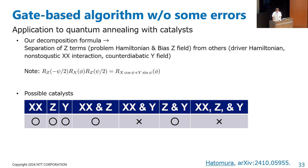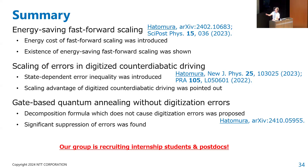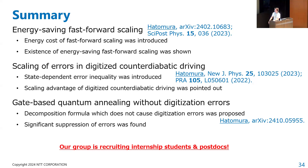This is the summary of catalyst applicability. We can apply the algorithm to quantum annealing with XX catalysts, Z-catalysts, Y-catalysts, or combinations of XX and Z catalysts, or Z and Y catalysts. To conclude, I discussed three topics: energy-saving fast-forward scaling, where I introduced the energy cost framework and showed the existence of energy-saving solutions; scaling of errors in digitized counter-diabatic driving; and a gate-based decomposition formula that does not cause digitization errors. Our group is now recruiting research students — if you are interested, please contact me.